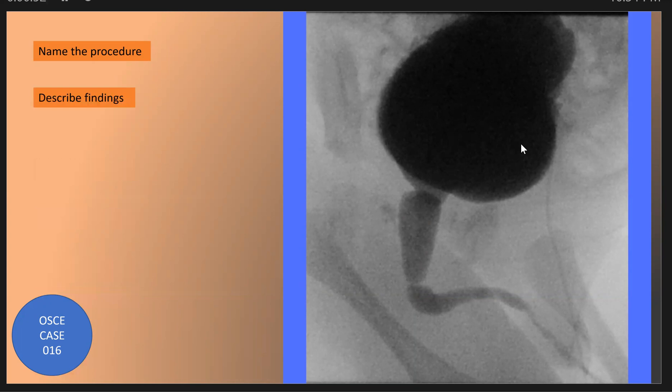The next question: what are the radiological findings seen in this voiding cystourethrogram? As we see here, the urinary bladder is distended and trabeculated, and the posterior urethra is dilated with elongation of the posterior urethra.